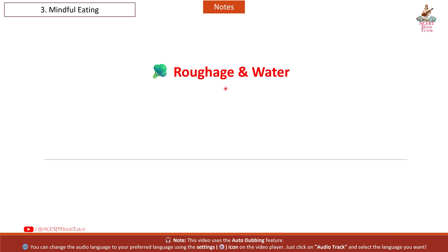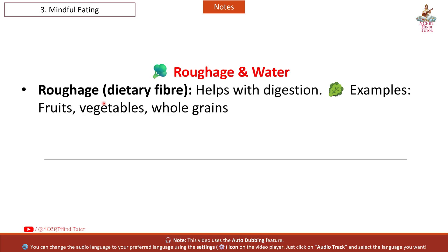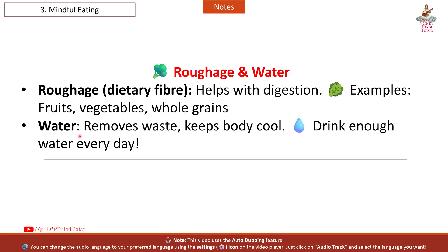Next: Roughage and Water. Roughage is dietary fiber and helps with digestion. Examples: fruits, vegetables, whole grains. Water removes waste and keeps the body cool. Drink enough water every day.